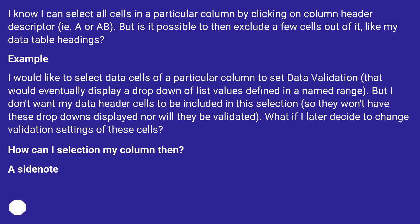I would like to select data cells of a particular column to set data validation, that would eventually display a dropdown of list values defined in a named range. But I don't want my data header cells to be included in this selection, so they won't have these dropdowns displayed nor will they be validated.